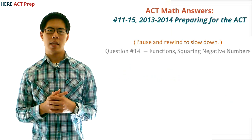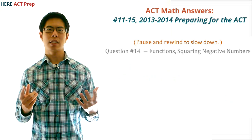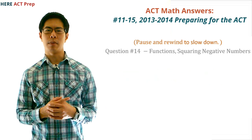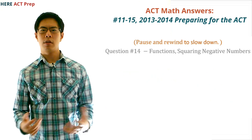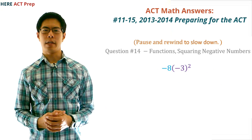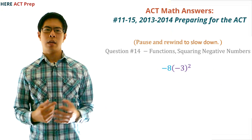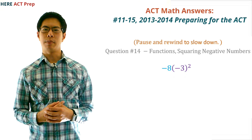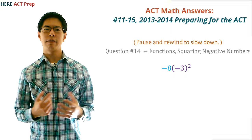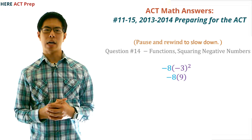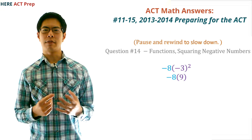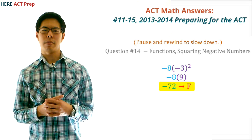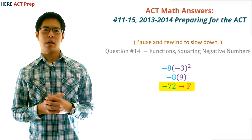Question number 14. The concept this question tests is functions and squaring negative numbers. To do this question, we simply plug negative 3 into the function, but we need to be very careful about the negative numbers here. Negative 3 squared equals positive 9, and negative 8 times 9 equals negative 72. So the answer is F.